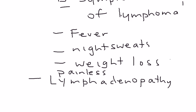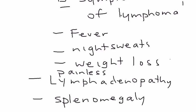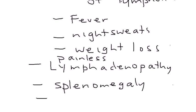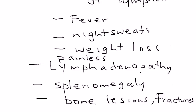Another physical exam finding: since Hodgkin's lymphoma involves B cells that are part of lymphoid tissue, and lymphoid tissue can be found in the spleen, if the spleen is involved it will be enlarged — splenomegaly, which means enlargement of the spleen. If Hodgkin's lymphoma involves the bone marrow, the bone will be affected, producing bony lesions and possibly fractures.